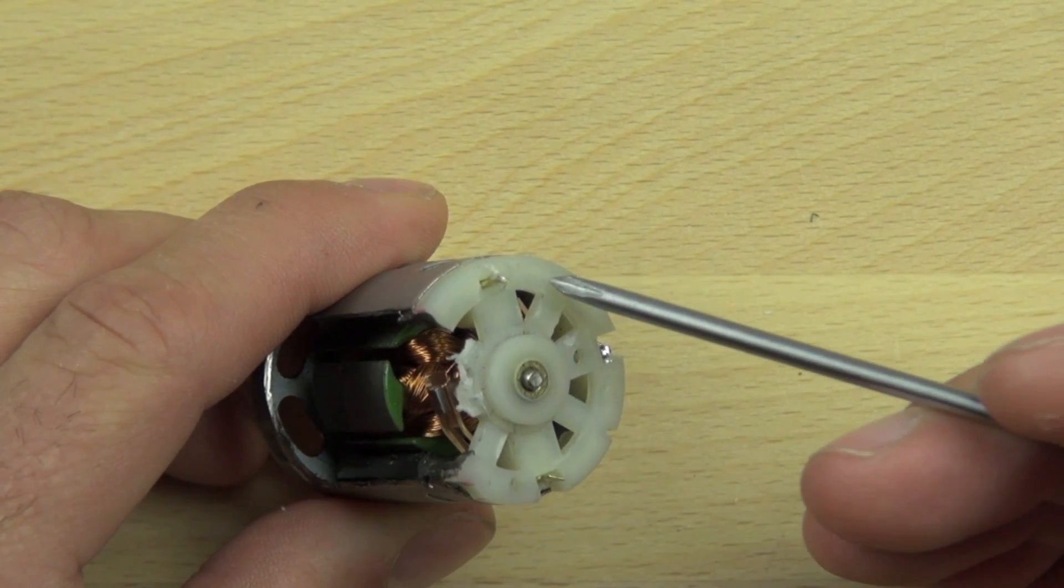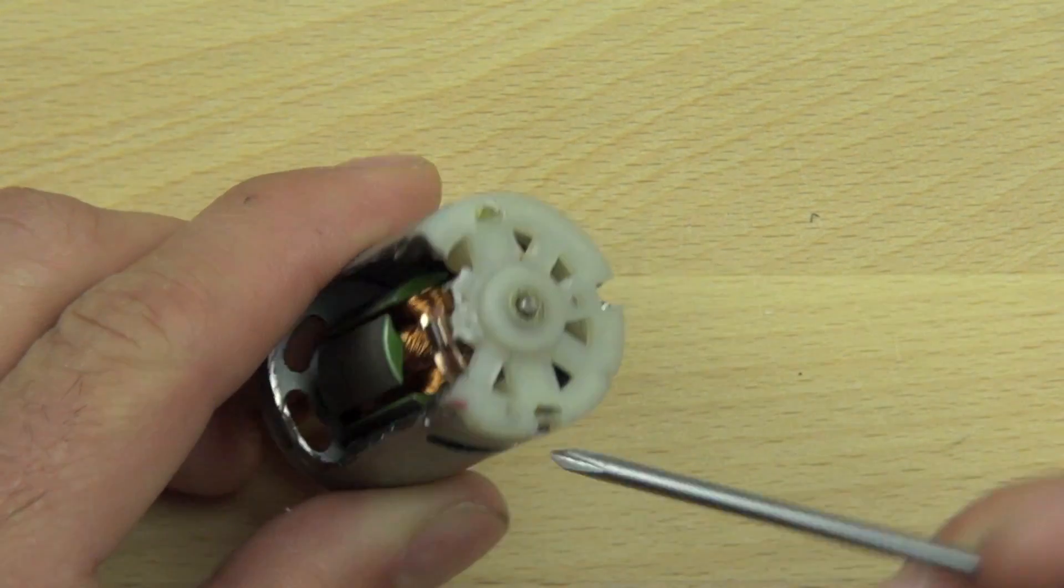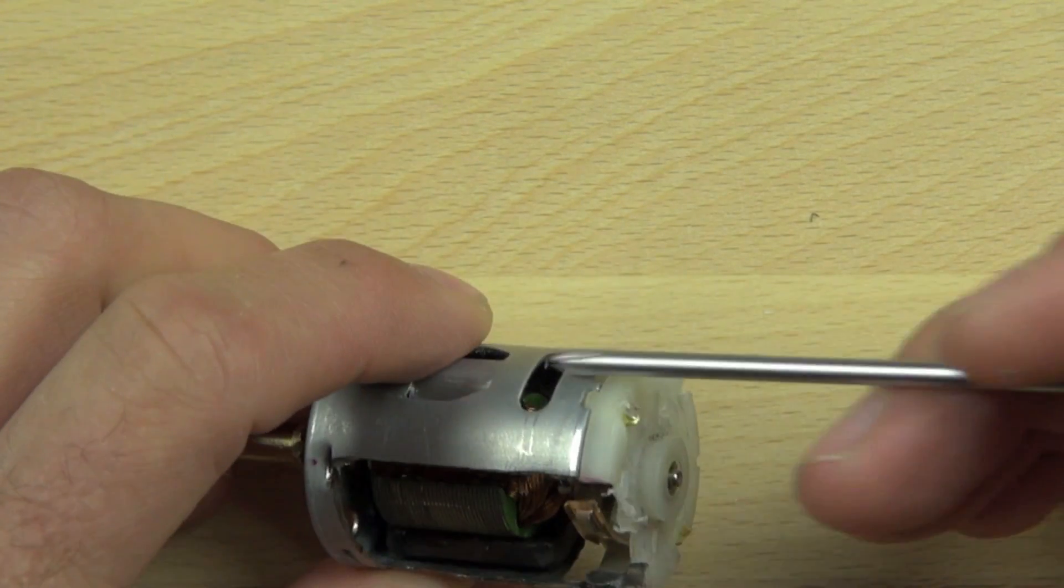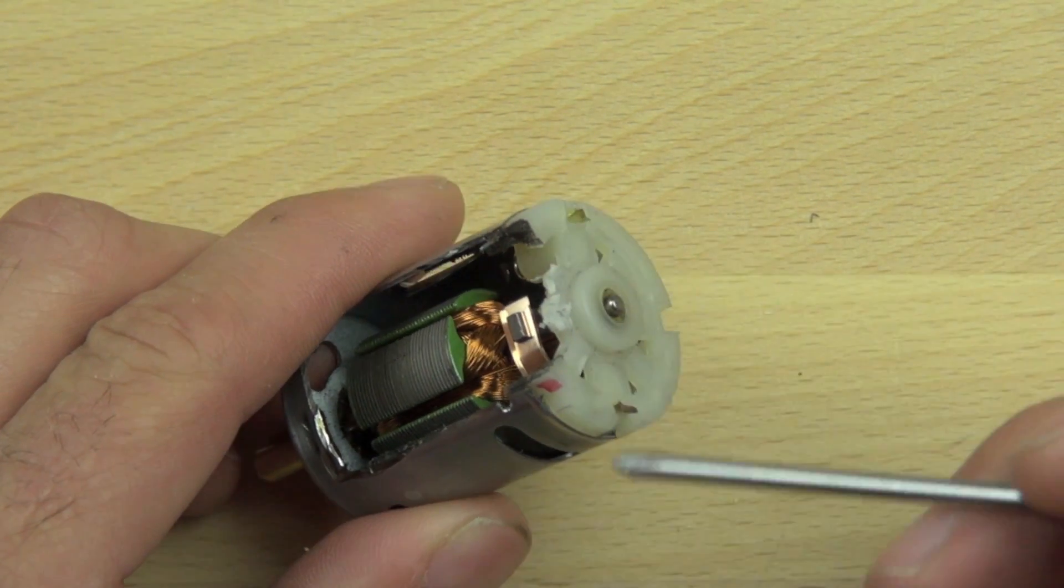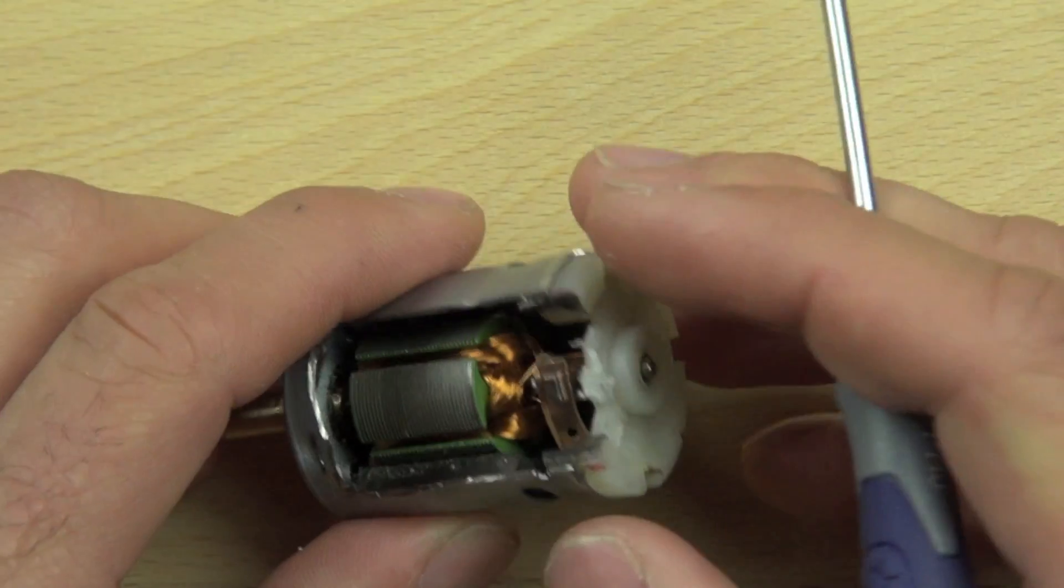The housing here keeps these contacts from shorting against the outer housing since this plastic piece, since this is plastic, it keeps these from shorting against the outer housing.